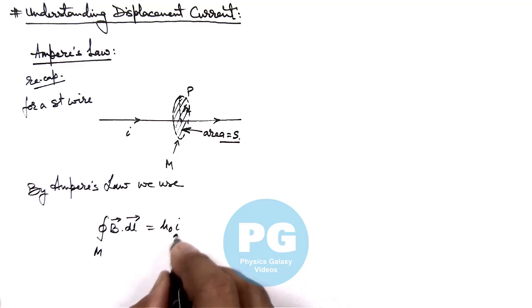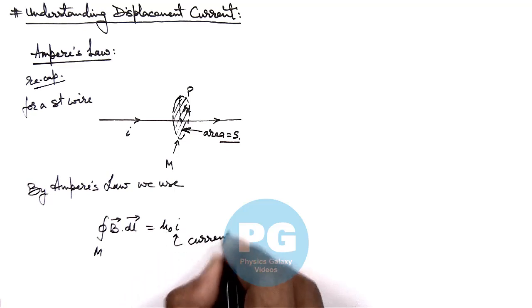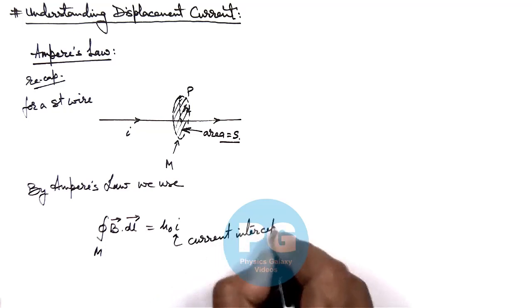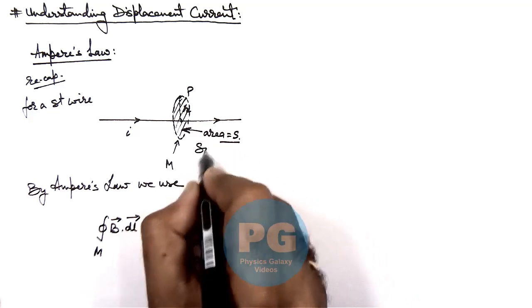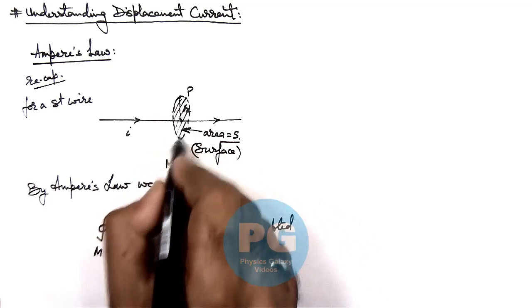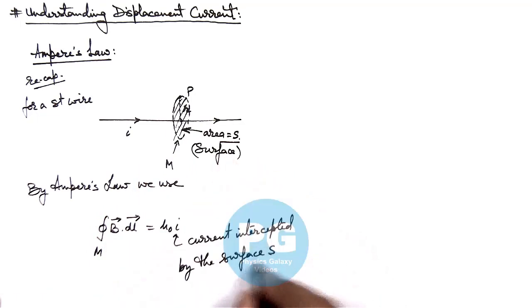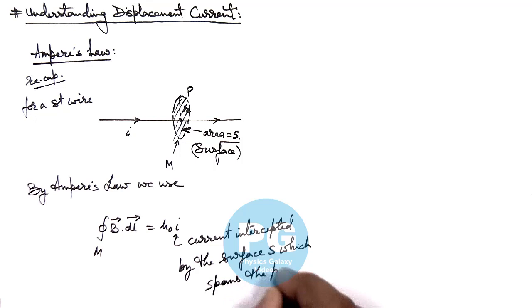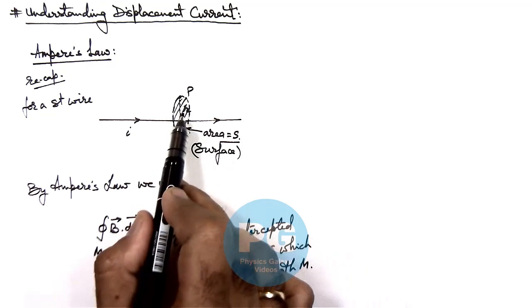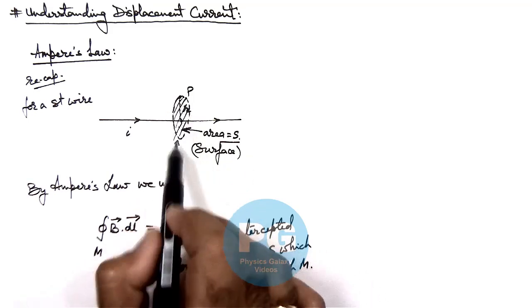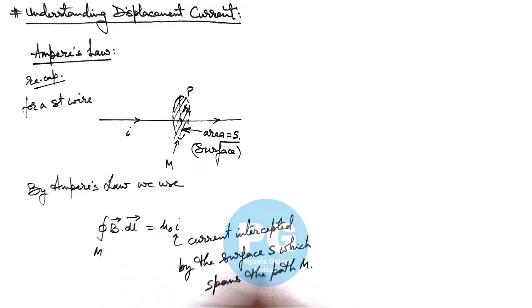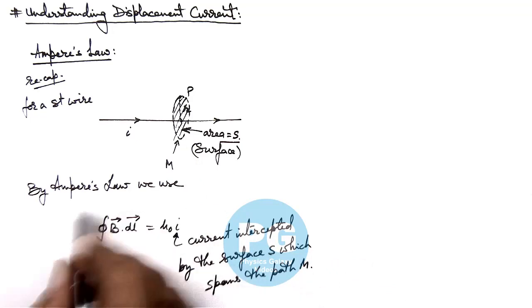Here you need to be very careful: I is the current intercepted by the surface S which spans the path M. The surface S is, at its periphery, connected with the path M. So the current intercepted by the surface spanning path M is the current I, and that is what is used in Ampere's law.